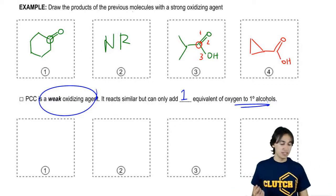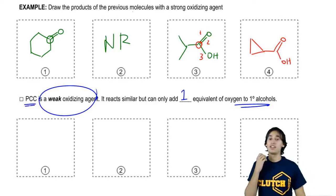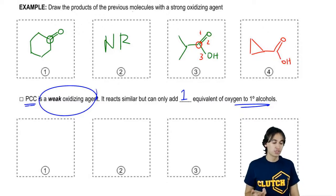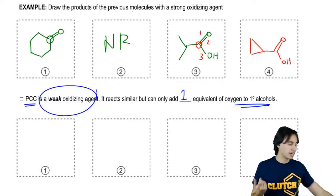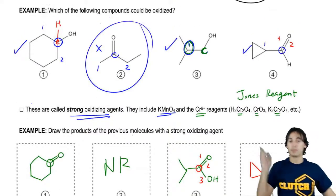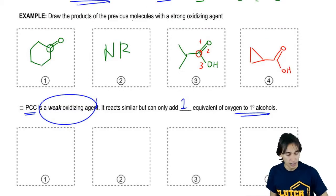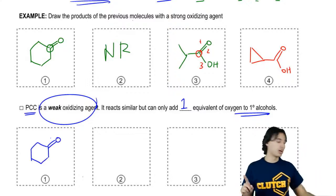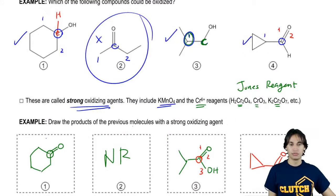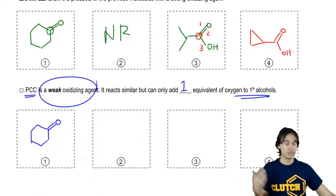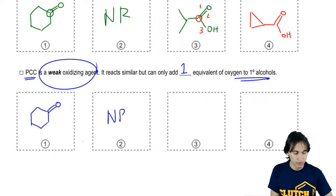So PCC is the name of this reagent and it is our weak oxidizing agent. So would it be able to oxidize my secondary alcohol? Absolutely. It's going to do the same exact thing. So for PCC, I would get the same exact product. Would it be able to oxidize number two? No. Nothing can oxidize number two. It's still no reaction.